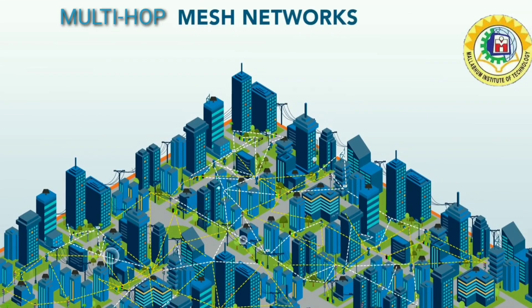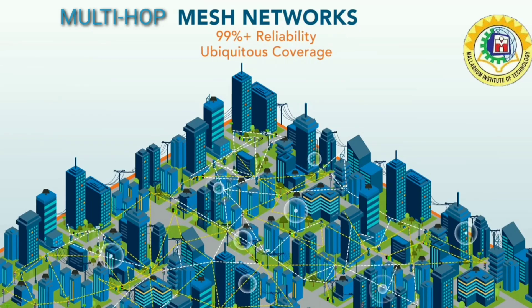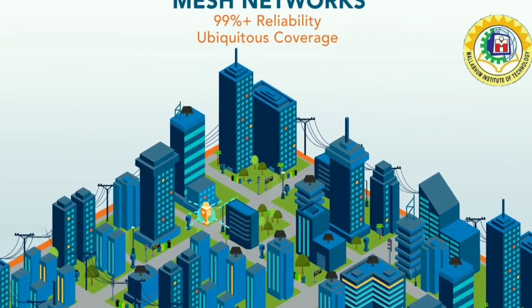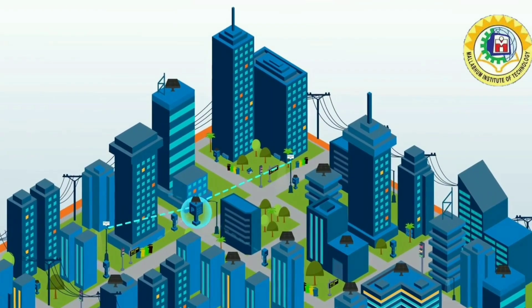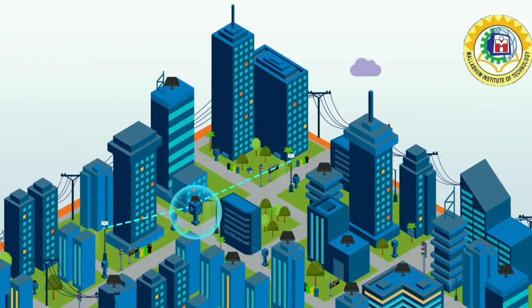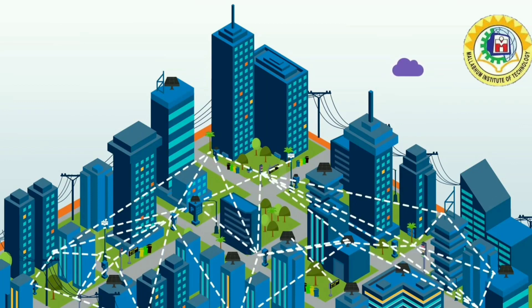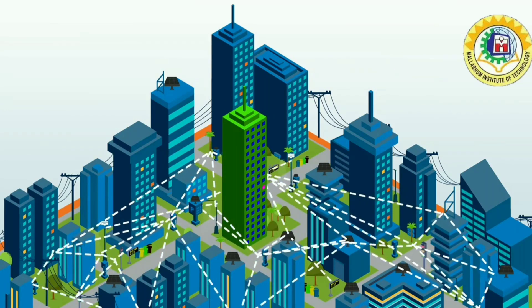Multi-hop routing is a type of communication in radio networks in which the network coverage area is larger than the radio range of single nodes. Therefore, to reach some destination a node can use other nodes as relays. The purpose of using multi-hop mesh topology is to reduce energy consumption by reducing the number of nodes relaying the data from source to destination.